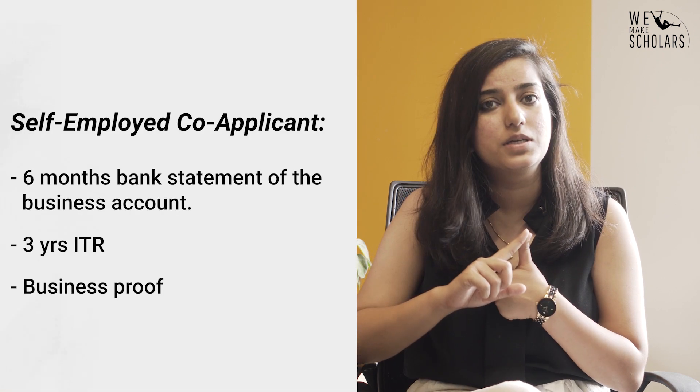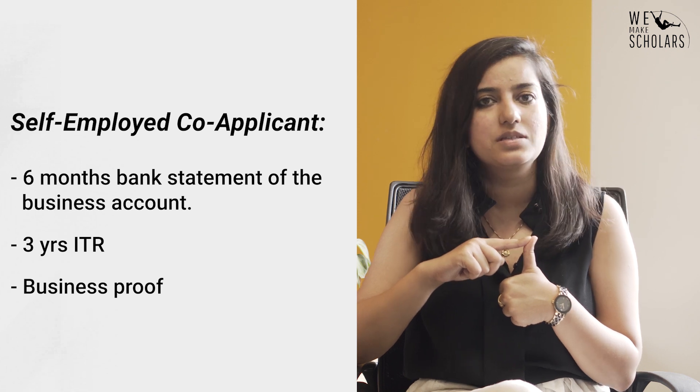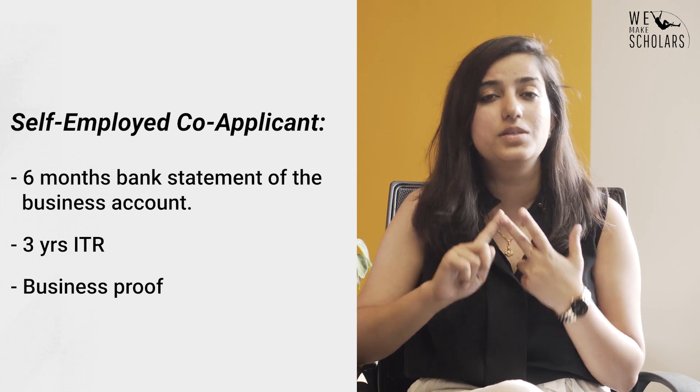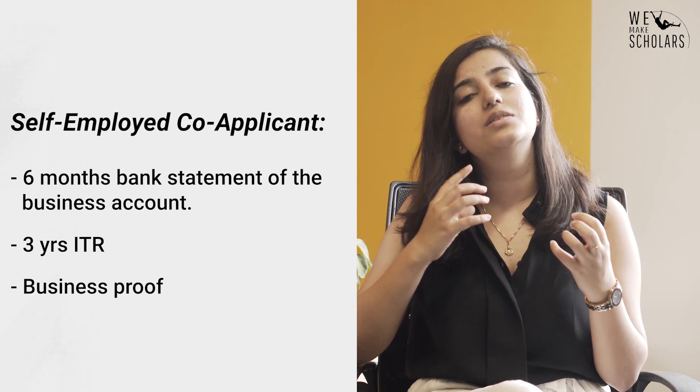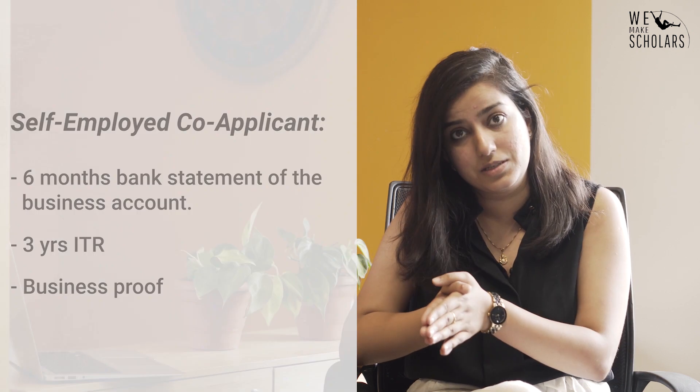If your co-applicant is self-employed, you would again need a minimum 6 months bank statement of the account through which he or she does business transactions, a minimum 3 years of ITR, and most importantly the business proof. It is much easier to arrange business proof if it is a registered business — in that case you can submit the profit and loss statement or GST registration. But if the business is small, you will have to look for things like shop registration and vendor purchase bills.